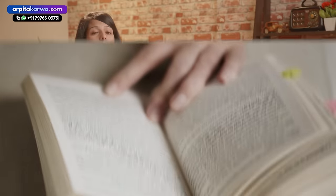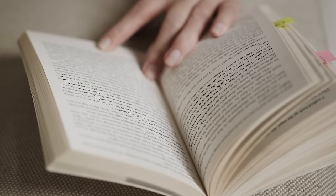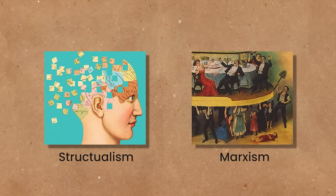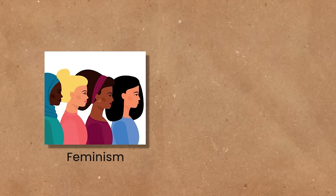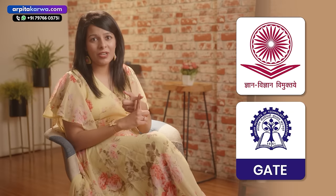In this video, I'm going to be talking about all literary theories ranging from Structuralism to Marxism, from Feminism to Queer Theory. There are many students who think that these literary theories are very difficult and also think about skipping these theories altogether if they are preparing for exams like UGC Net English or Gate English.